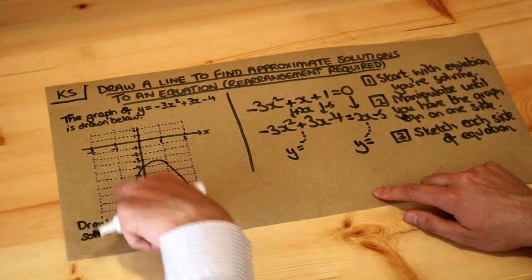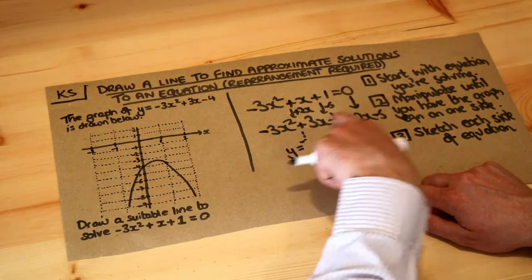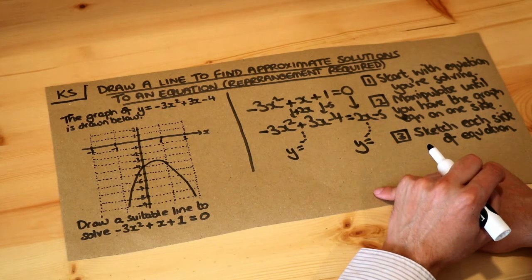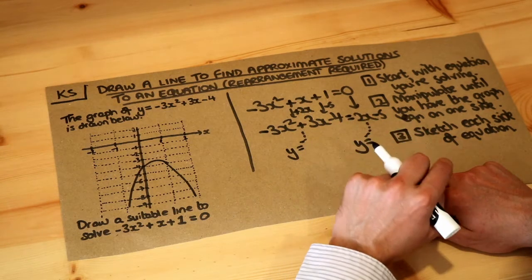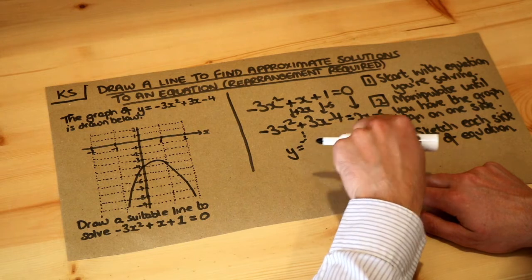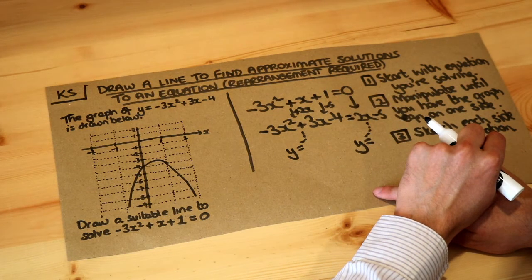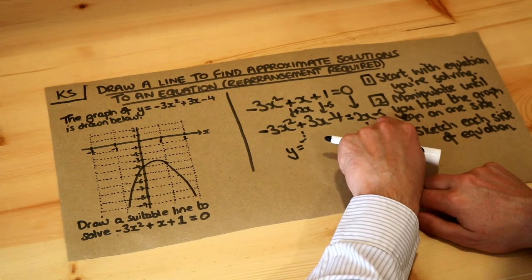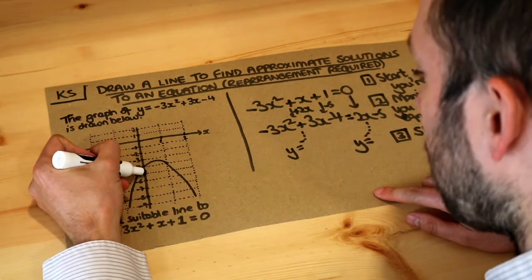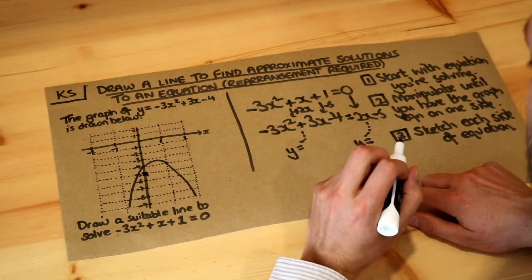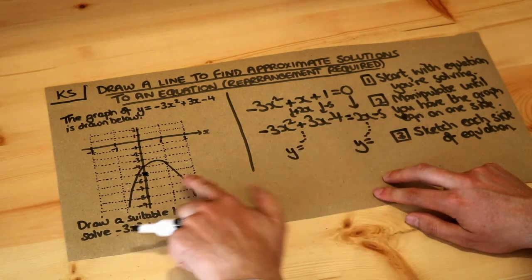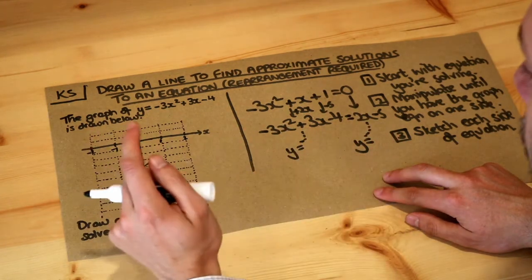We've already got a sketch of the left-hand side, but we also need a sketch of y equals 2x minus 5. That's a straight line equation—remember y equals mx plus c is the general equation of a straight line. The c here is minus 5 so it goes through minus 5, and the gradient of 2 means it's going up by 2 units each time. But we could just plug in a value of x and see what y is.